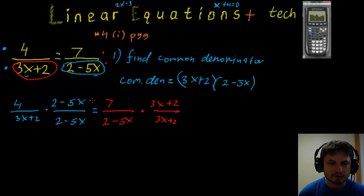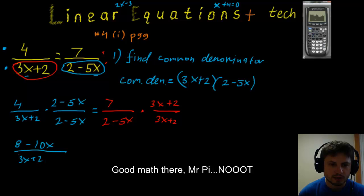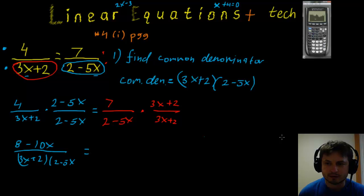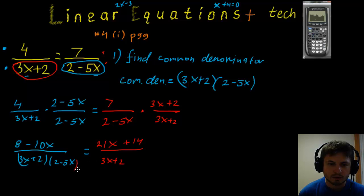Expanding the left side: 4 times (2 minus 5x) gives 8 minus 20x, over the common denominator (3x+2)(2−5x). The right side: 7 times (3x+2) gives 21x + 14, also over (3x+2)(2−5x).